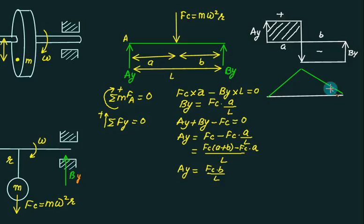So can we find out what is the maximum height? Maximum height will be equals to Ay multiplied by A. If you put this value back into Ay, you will get Fc into B into L, Fc into A into B divided by L. And you get the same value from this side also. So do not bother about this one.